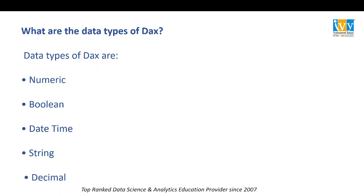What are the different data types used in DAX? Data types in DAX can be numeric, boolean, date and time, string or text, and decimal.